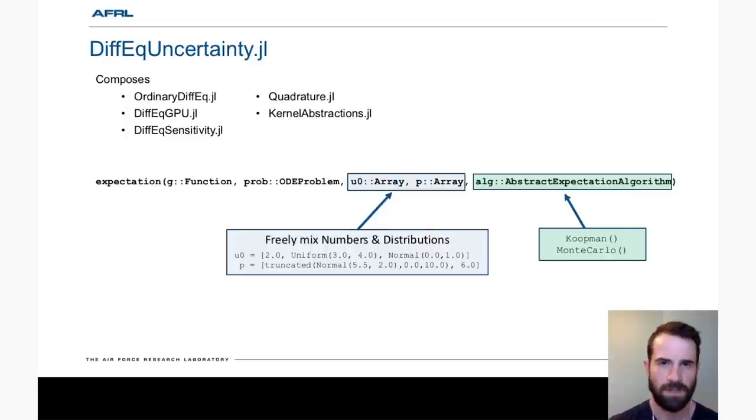So we've built this capability into DiffEq uncertainty by composing several other packages in Julia. I would like to point out the quadrature package that was developed as part of this work. It's essentially a meta package around other quadrature approaches in Julia. Right now we export a single function expectation that takes the observable g and ODE problem arrays for the initial conditions and parameters.